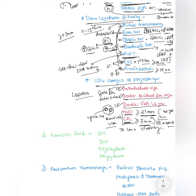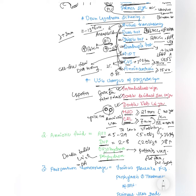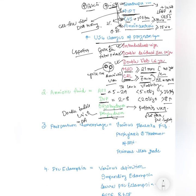For amniotic fluid: the amniotic fluid index normal range is 5 to 24, and deepest vertical pool (DVP) normal is 2 to 8. Less than 5 (AFI) or less than 2 (DVP) is oligohydramnios; more than 24 (AFI) or more than 8 (DVP) is polyhydramnios. Oligohydramnios is associated with Potter sequence — flat face, pulmonary hypoplasia. Polyhydramnios is associated with the double bubble sign in duodenal atresia and twin-twin transfusion syndrome.